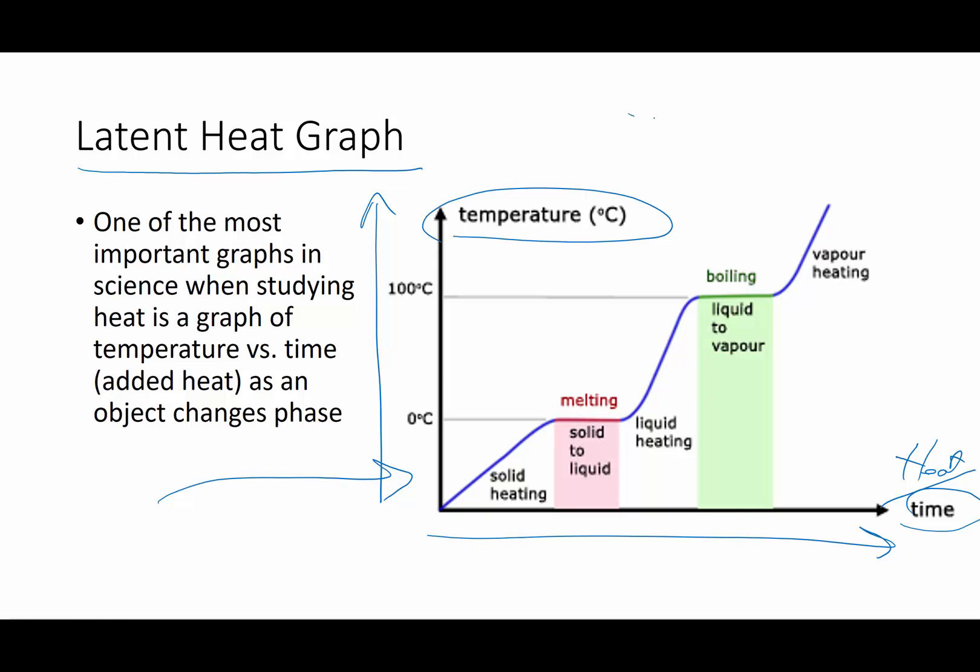Imagine that we took a big beaker and we went outside and we got a big container of snow, and we put it on a nice steady heat source. And we put a thermometer in that bucket of snow and we took its temperature every 30 seconds and then every 30 seconds we plotted the temperature as heat was added at a steady rate through time.